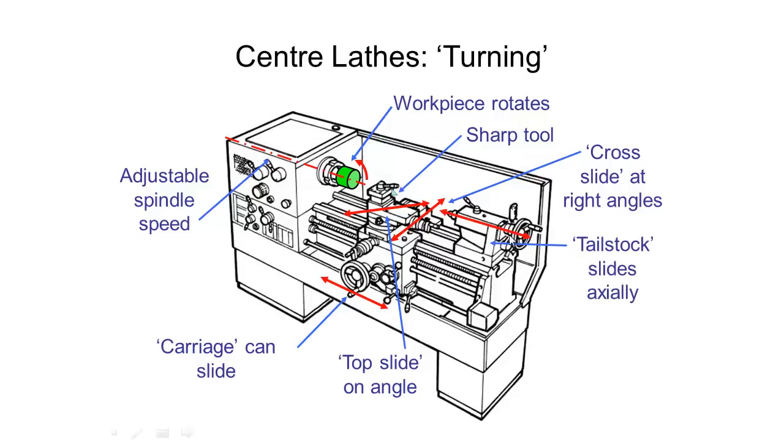At the end here we have a tailstock. This slides in and out axially using these handles here. And generally that is in line with the centre of our spindle. If need be though, it can be moved off centre. However, that's generally uncommon.